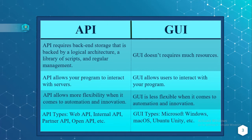API allows your program to interact with servers, whereas GUI, that is Graphical User Interface, allows users to interact with your program. It does not require a server for GUI.